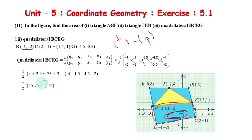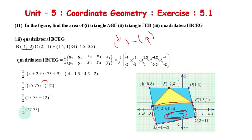Answer: 1/2 of 15.75 minus (minus 12). Minus into minus automatically becomes plus, so 1/2 of (15.75 plus 12) equals 1/2 of 27.75, giving answer 13.875 square units. That's the result.